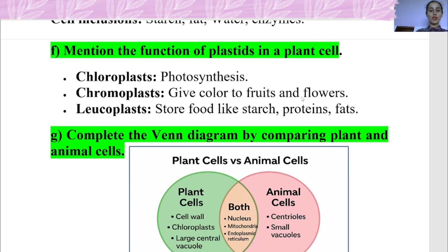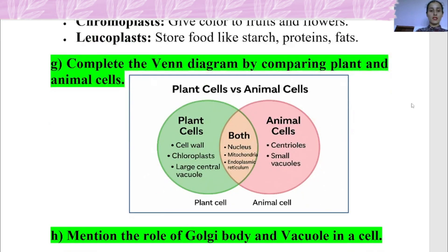Chloroplasts carry out photosynthesis. Chromoplasts give color to fruits and flowers. Leukoplasts store food like starch, protein, and fats.